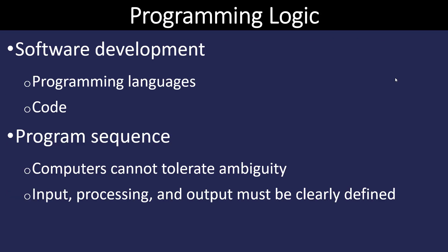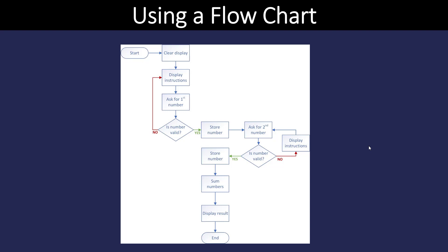Software developers use a process called software development in which they utilize a programming language to write code. That code is a sequence of commands that are carried out. Programs are not very tolerant of ambiguity — everything has to be very precise. Punctuation, capitalization, all that information matters. Inside the program, we also have to clearly define what is input, what is processing, and how the program is going to output its results. We can think of writing a program as a flow of a sequence of events.